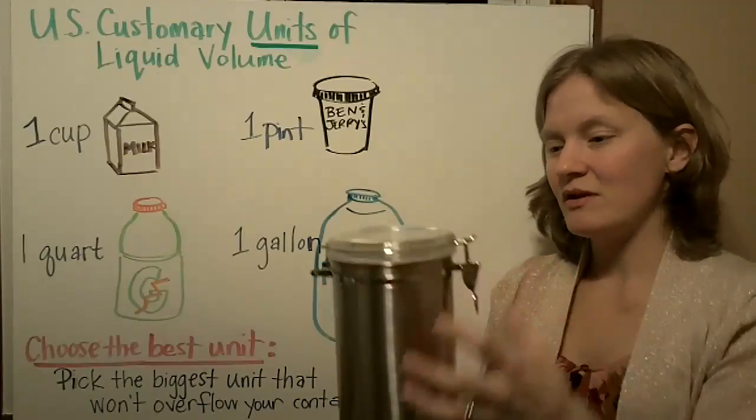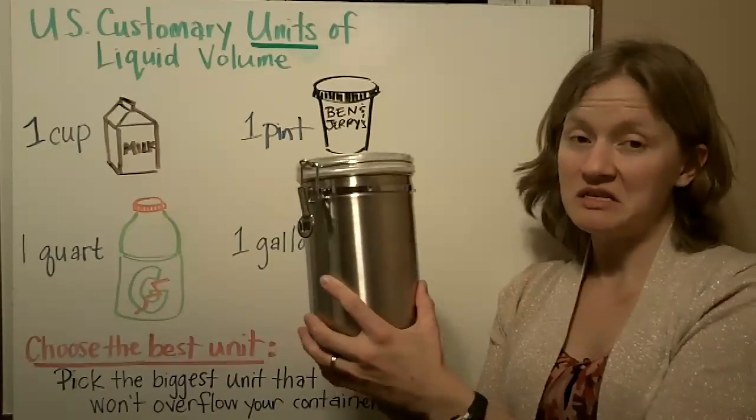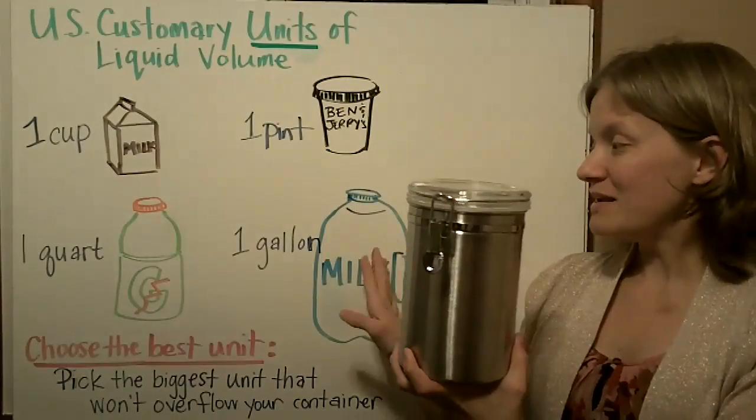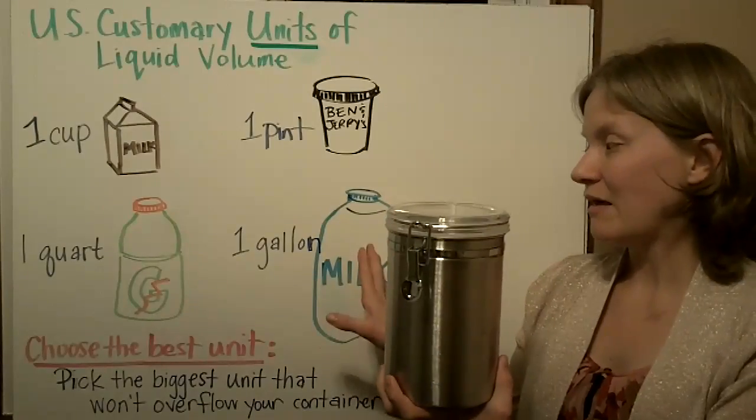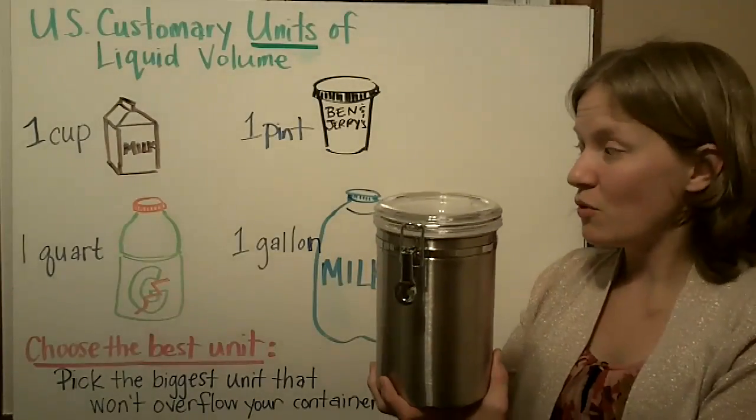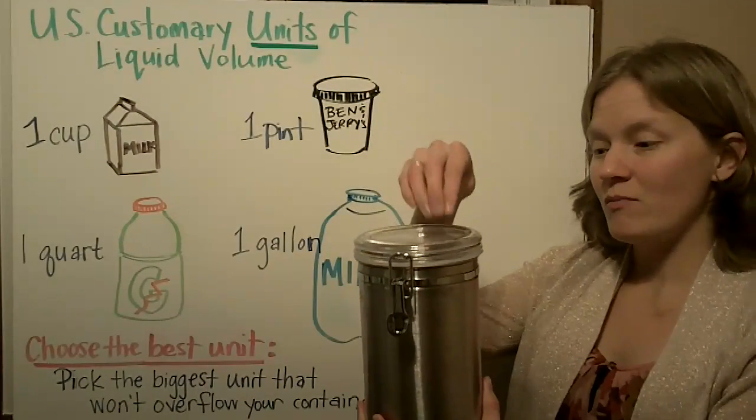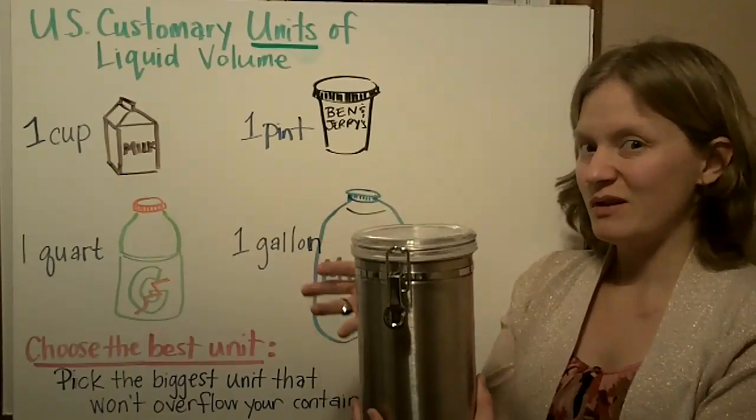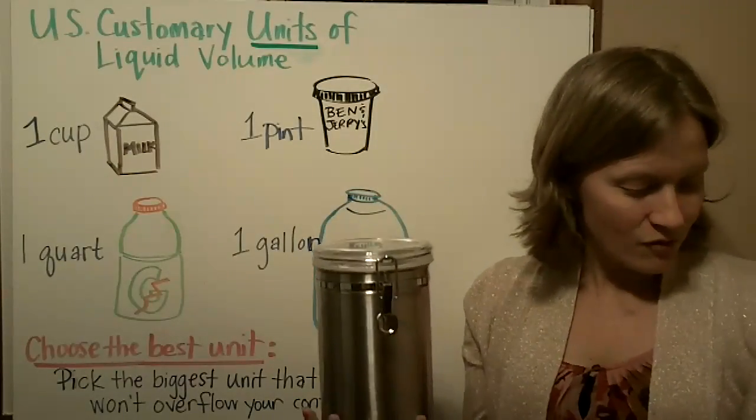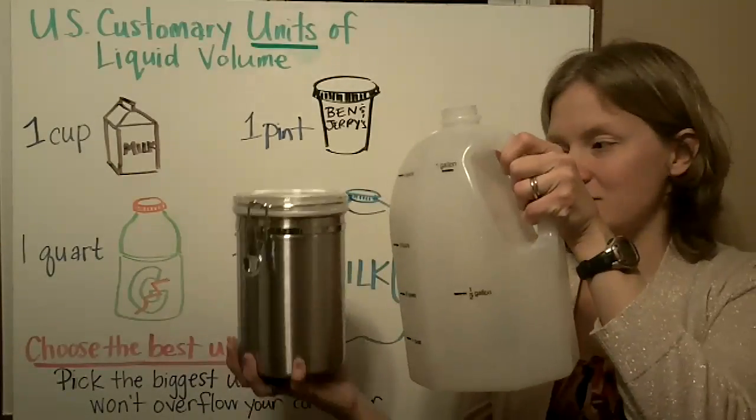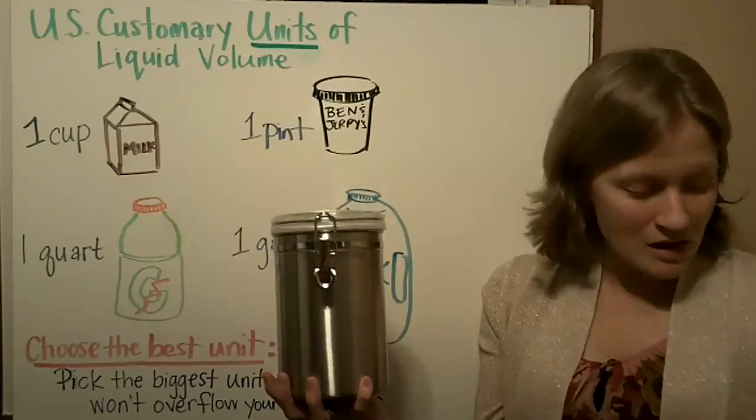For example, if I wanted to figure out the capacity of this container, I'd start with my biggest measurement, the gallon, and ask if I could pour this gallon in here without overflowing. We know it would overflow because this container is much bigger. So we go down to the next one.